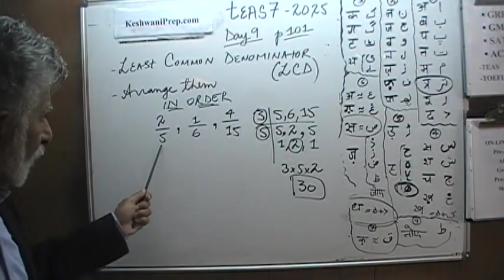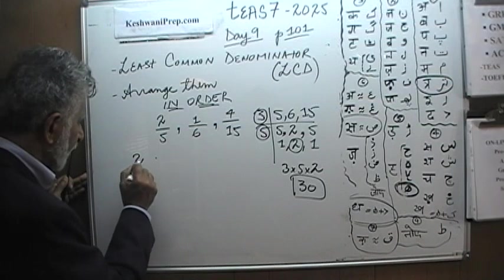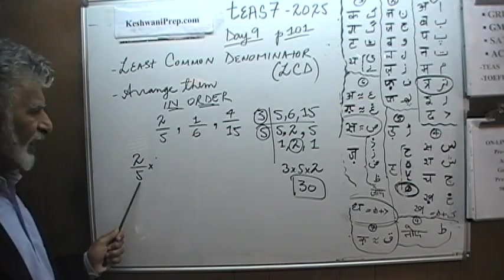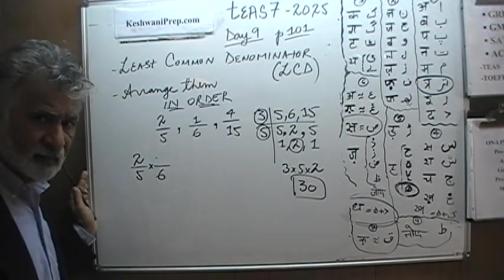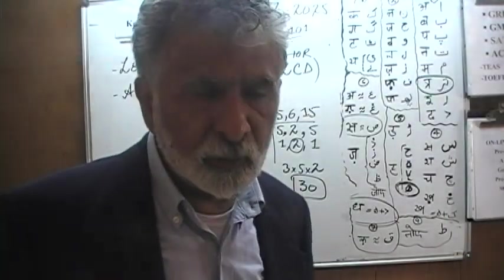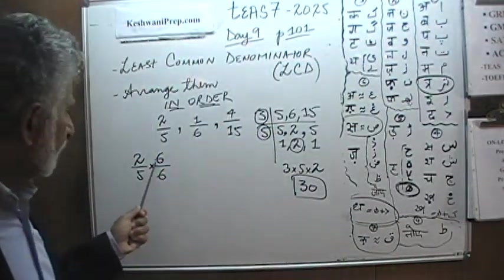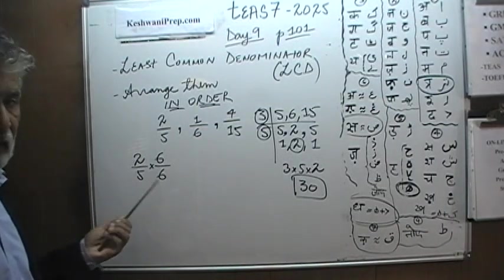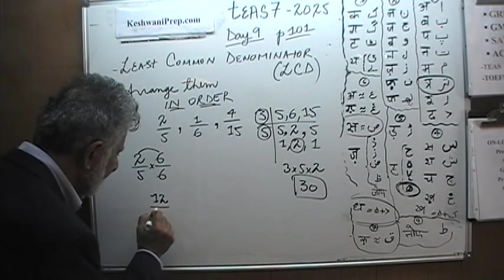Now our job is to convert all of these denominators to 30. Let's look at the first one. 2 over 5. What can I multiply 5 by to make it 30? The answer is 6. If you're going to multiply the bottom by 6, you must multiply the top by 6. Whatever treatment you're going to give to the bottom, you have to give the same treatment to the top. Otherwise, the value will change. But 6 divided by 6 is 1. Therefore, multiplying 2 fifths by 1 does not change its value. And now we have 12 over 30.